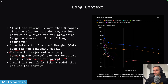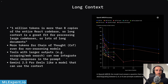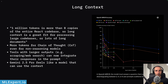One million tokens is more than eight copies of the entire React codebase — so if you're using VS Code or Cursor you'll probably be able to fit everything within the context along with your instructions. Also, tools outputting large amounts of text — like web search results, scraped documents, or tool execution outputs — will be nicely added to your prompts. Context windows are finally becoming genuinely useful.